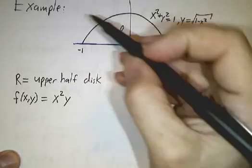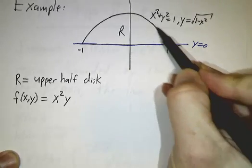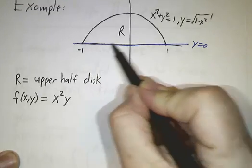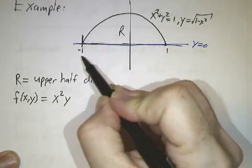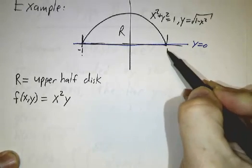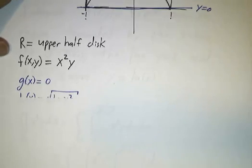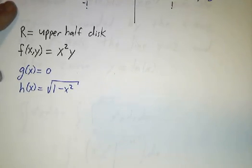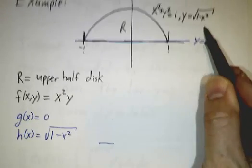And that means that y is the square root of 1 minus x squared. So we're looking for the region between the curve y equals the square root of 1 minus x squared and y equals 0, between a equals negative 1 and b equals 1. So this is a type 1 region. In terms of our earlier notation, g of x is 0, h of x is the square root of 1 minus x squared.